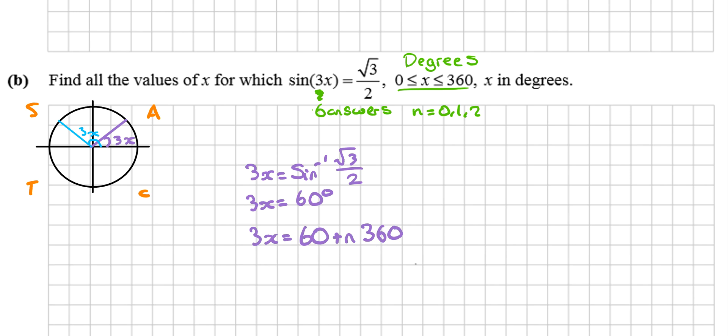Now I'm adding on degrees—I'm adding on a full circle or n full circles—and x equals 20 plus n(120).